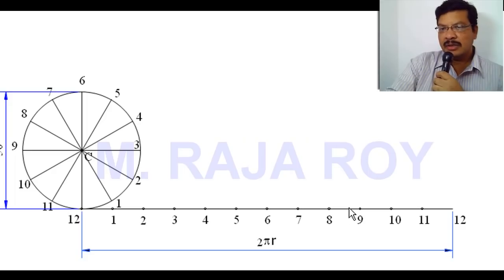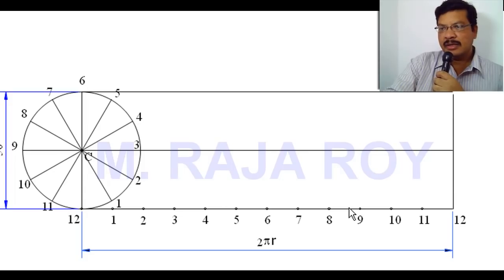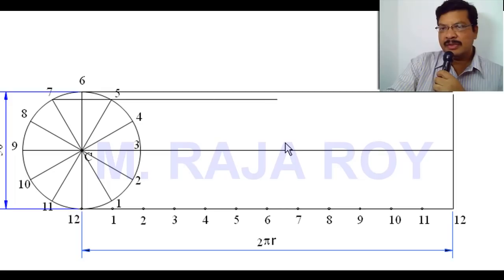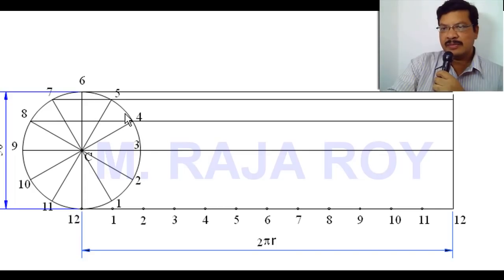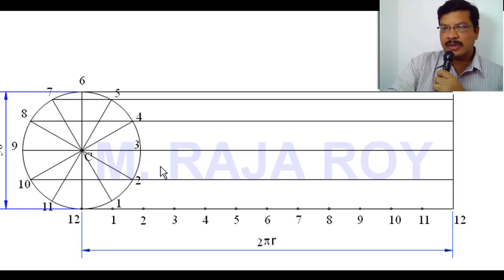The next step is to draw the locus lines at 3, 6, and complete a rectangle like this. Next, draw a locus line from 7 and 5. This is the locus line of 7 and 5. Next, draw a locus line joining 8 and 4. Next, draw another locus line joining 10 and 2. We have already drawn the locus line from 9 and 3. Now draw the locus line joining 10 and 2, and another locus line joining 11 and 1.